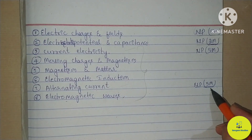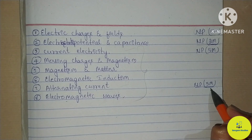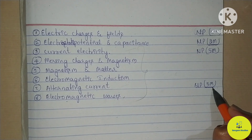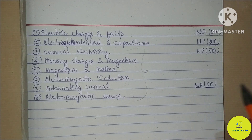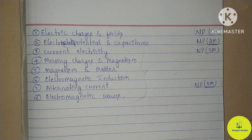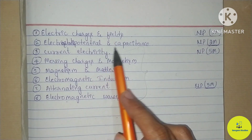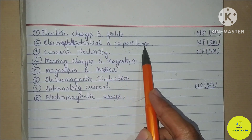I will show you these 2 chapters in the midterm examination in a separate video. Remaining Chemistry and Biology important questions will also be covered separately. So now I will show you the important questions of Electrostatic Potential and Capacitance.